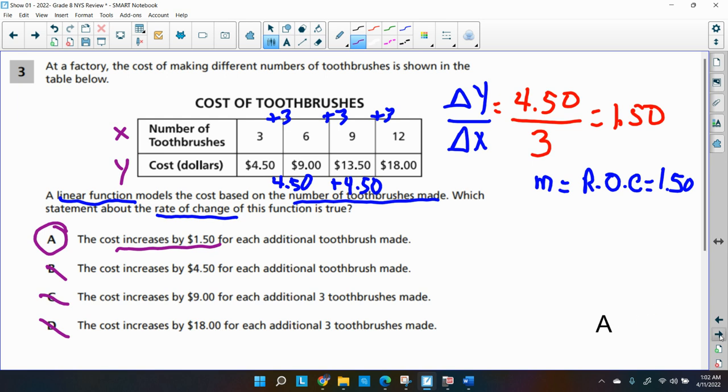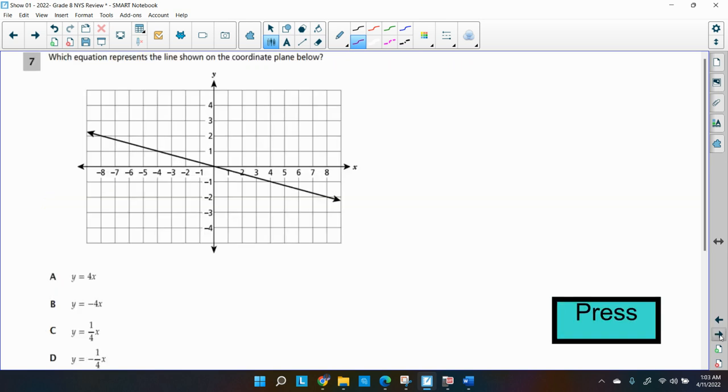I hope you figured that out with me with no problem. There's another way, you know, write your point-slope formula. But I thought that was direct. All right, let's keep going.